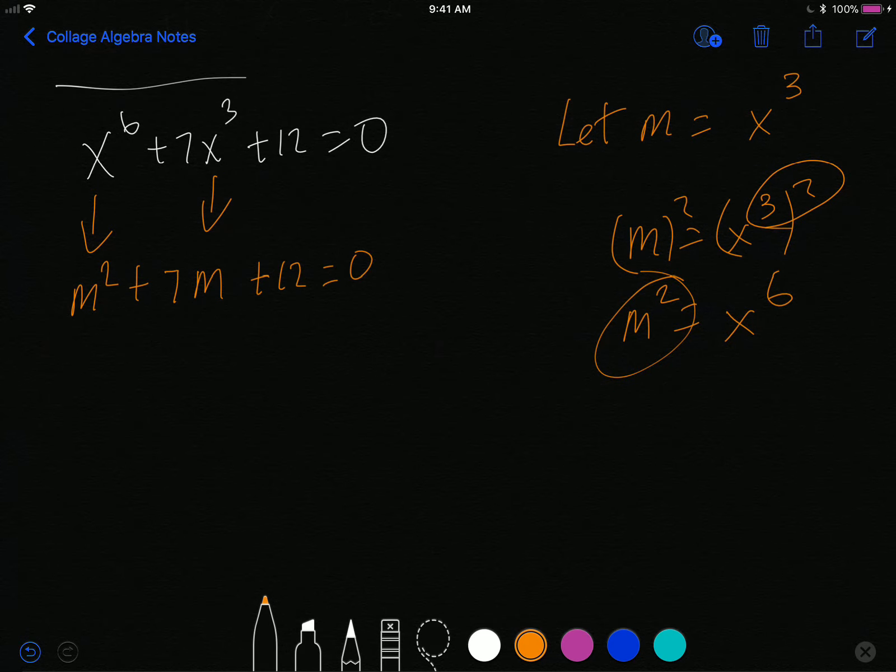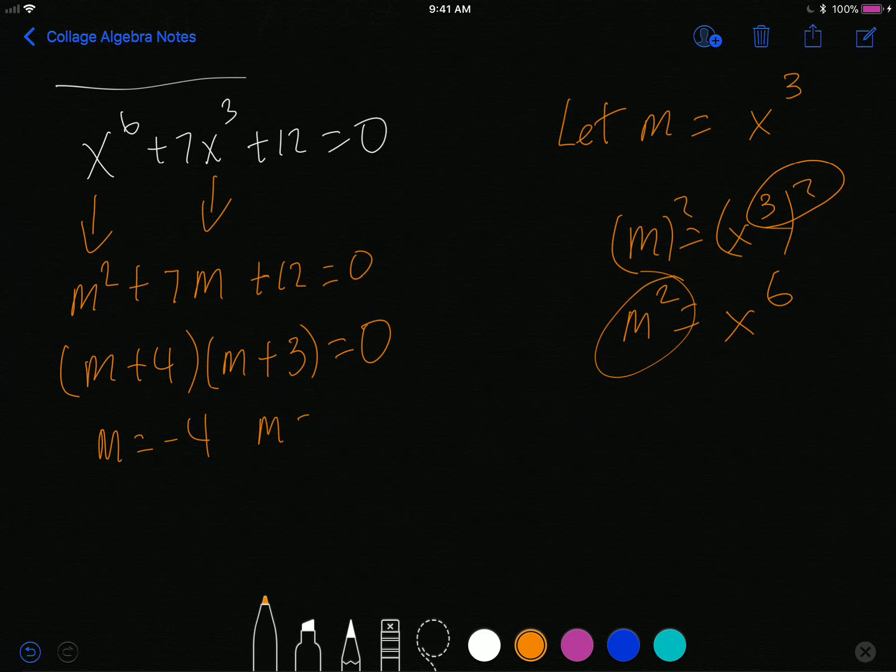And now, I have an equation of quadratic type that I can solve. This factors, I believe it does. So we have 4 and 3. So that's m plus 4, m plus 3 is equal to zero. So m equals negative 4. And m equals negative 3.